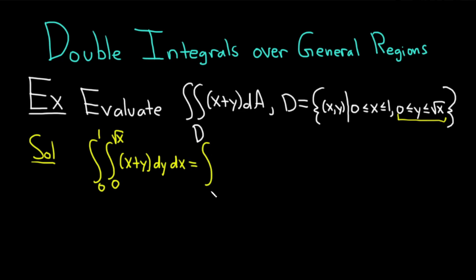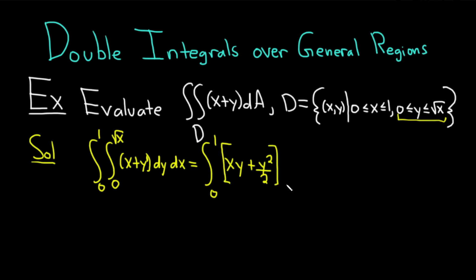This is equal to the definite integral from 0 to 1. Now we're going to integrate x plus y with respect to y, treating all x's as constants. When we integrate x, we get xy. When we integrate y, we use the power rule — there's a 1 here as an exponent — so it'll be y squared over 2. The lower limit is y equals 0 and the upper limit is y equals the square root of x.